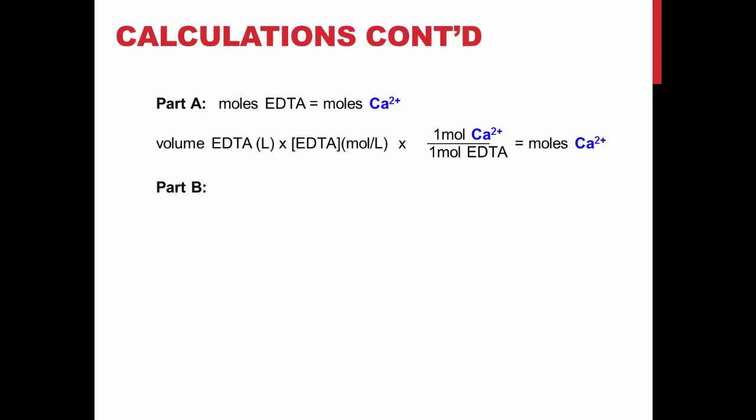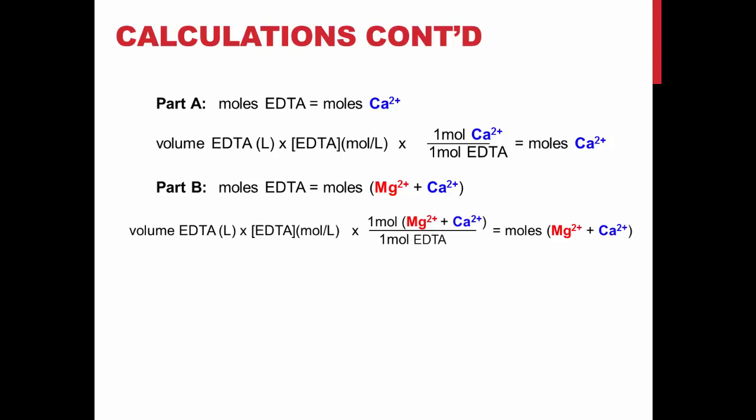In part B, we did not remove magnesium. Therefore, the moles of EDTA were equal to the moles of both magnesium and calcium combined. Using the same logic, you should be able to see how we can calculate moles of magnesium and calcium. Now, simply to find the moles of magnesium alone, we subtract the answer from part A from the answer of part B, therefore leaving moles of magnesium.